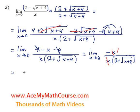So we have the limit as x approaches 0 of negative 1 all over 2 plus the square root of x plus 4. Fantastic. Look at this. Now, we can actually plug the 0 in without getting 0 in the denominator. Isn't that amazing?